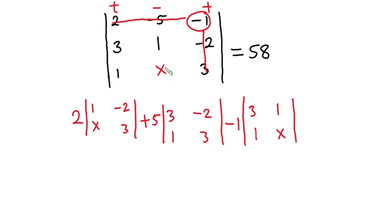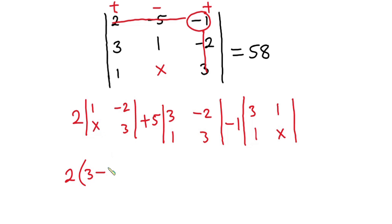This is the determinant approach. Now let's simplify. For a 2x2 matrix, you take the first element of the first row and multiply it with the second element of the second row, then minus the first element of the second row multiplied by the second element of the first row. So for the first term: 2 times (1 times 3 minus x times negative 2), which gives 2 times (3 minus negative 2x).